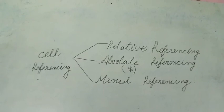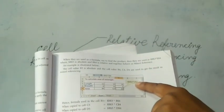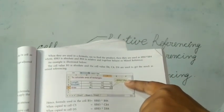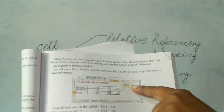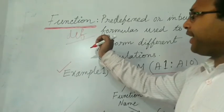The last one is Mixed Referencing. Mixed Referencing is a combination of Relative and Absolute Referencing. If you see the example given in your book on page number 27, the dollar sign is written in the formula in three places. It is a combination of both absolute and relative referencing, where it works together.